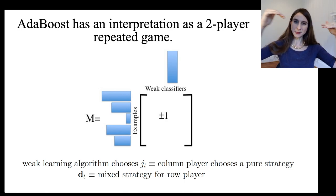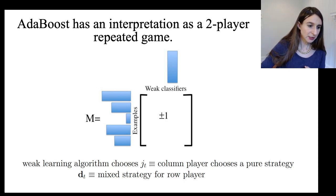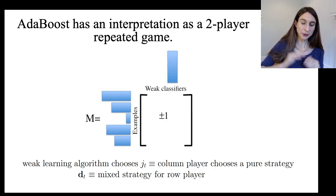So the way you can think about this game is that the weak learning algorithm is actually the column player. So the weak learning algorithm is manipulating the columns and at each iteration it chooses a pure strategy, which is one column. And that's the same thing as choosing a single weak classifier.